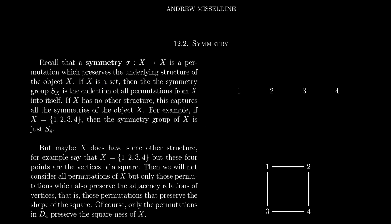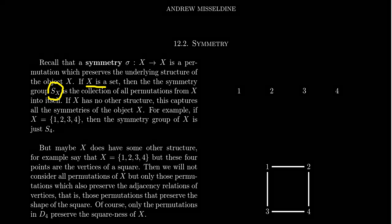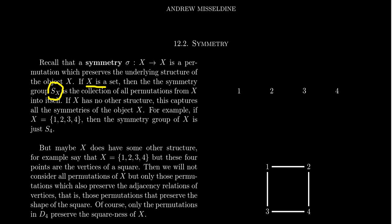So imagine X is just a set itself. I don't attach to it any necessary structure other than it's a collection of objects. As we've studied previously in this lecture series, if you have some set X, then the so-called symmetry group is called S sub X — the collection of all permutations from X back into itself. If X has no other structure, then this symmetry group S sub X captures all of the symmetries of the set X.